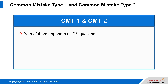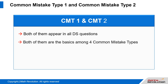A thorough knowledge can get you a score up to 48 in the Quant section. This would also include the easy questions. CMT1 and CMT2 are the basics among the four Common Mistake Types.